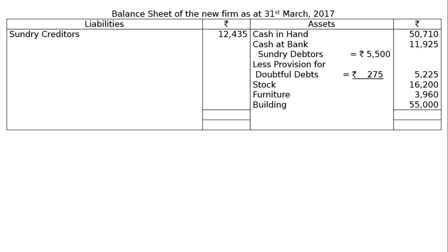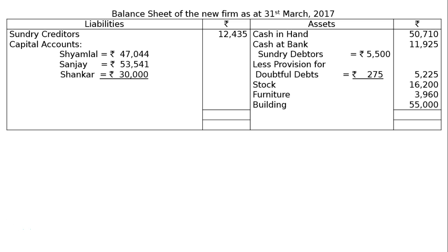On the liabilities side: sundry creditors Rs. 12,435. Capital accounts: Samlal Rs. 47,044; Sanjay Rs. 53,545; Sankar Rs. 30,000; total capital Rs. 1,30,585. The total of both sides of the balance sheet is Rs. 1,43,020. This is the final answer.